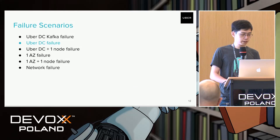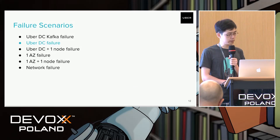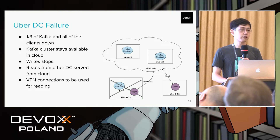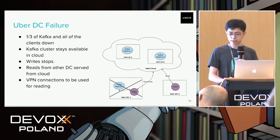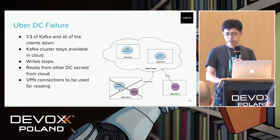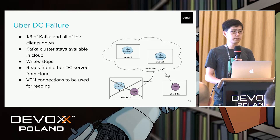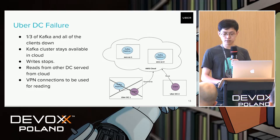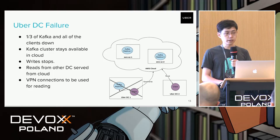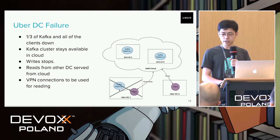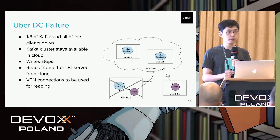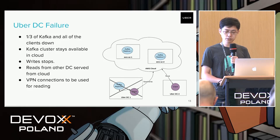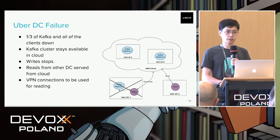The second scenario is the whole Uber data center going down. In this case not only is one third of the Kafka cluster down, but the clients in that data center are also down. Similar to the previous scenario, the Kafka service is still available in the cloud, but in this case writes stop. However, clients in remote Uber data centers can still read from the cloud. We also set up VPN connections for those clients to read from the cloud.